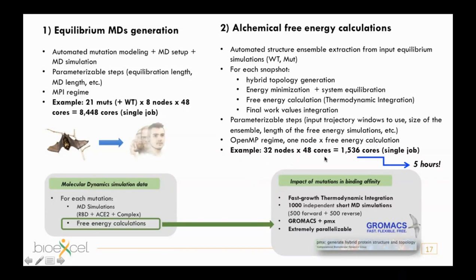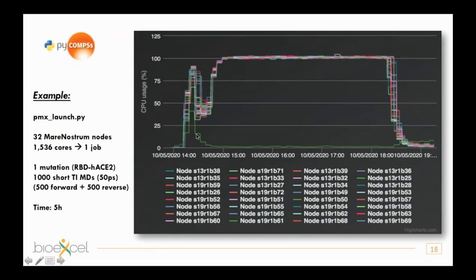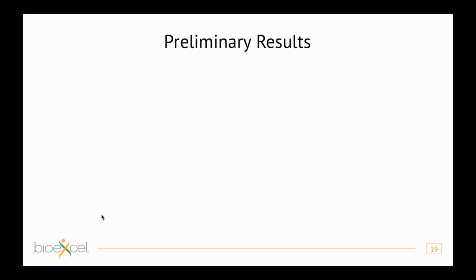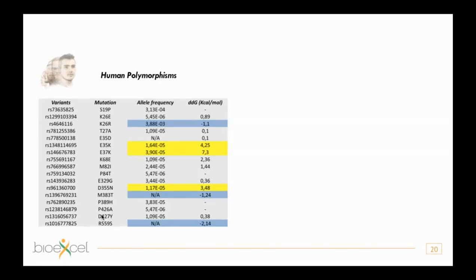As an example, using 32 nodes and more than 1,500 cores in a single job, we can compute one ΔG in approximately five hours. PyCOMPS achieves close to 100% CPU usage across all 32 nodes, with only the orchestration node using fewer CPUs — enabling 1,000 different thermodynamic integrations on a supercomputer.